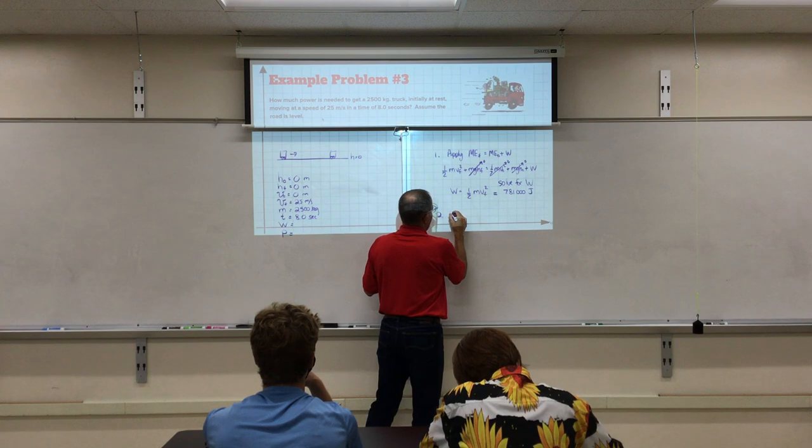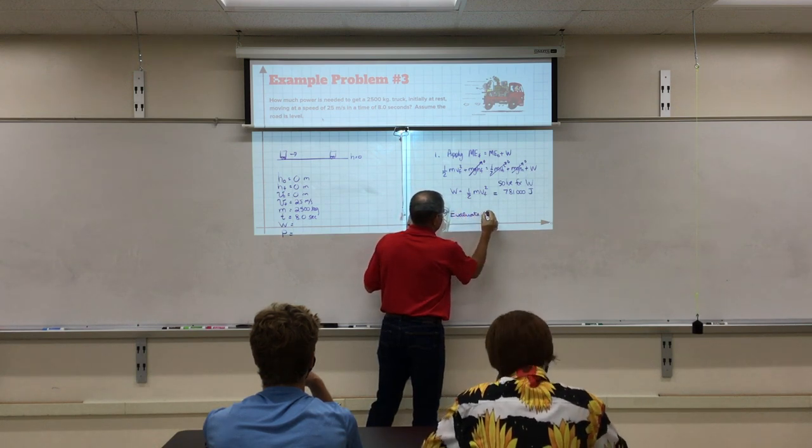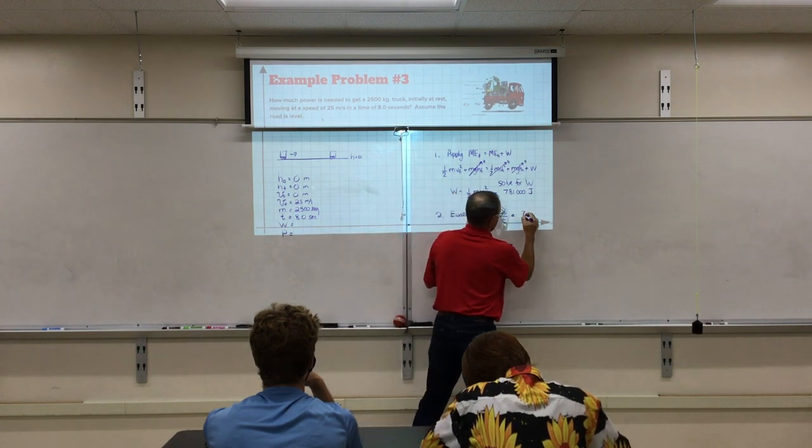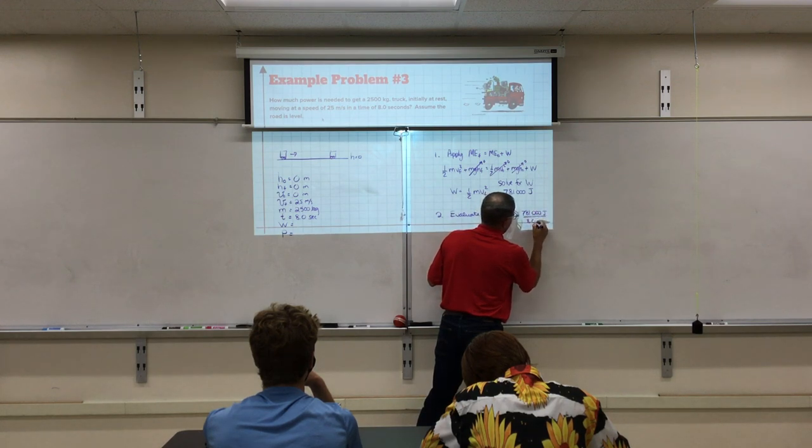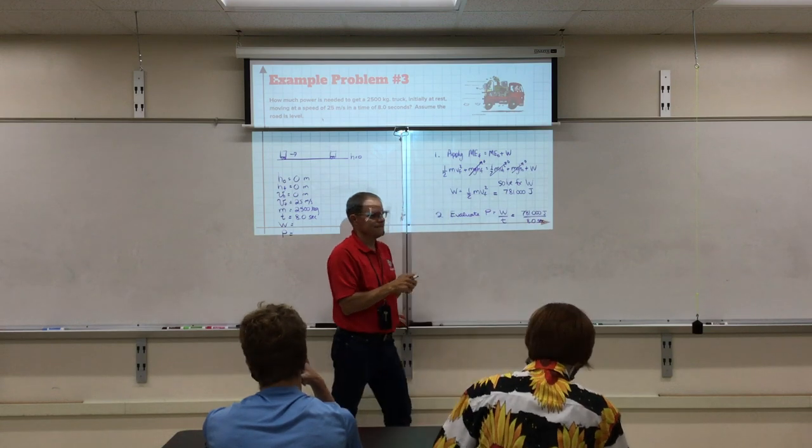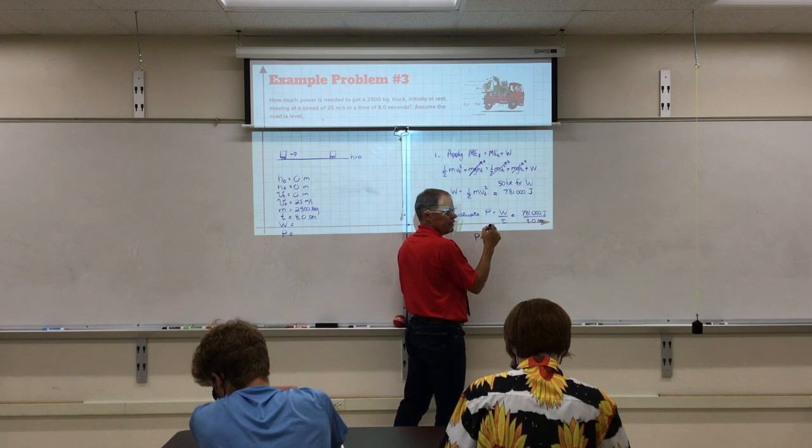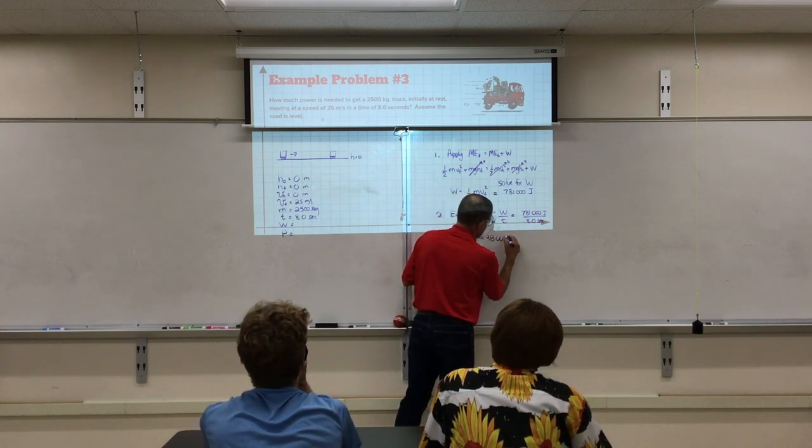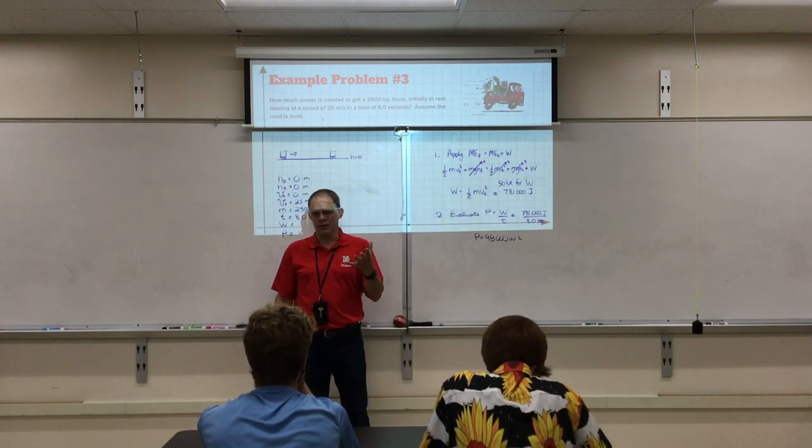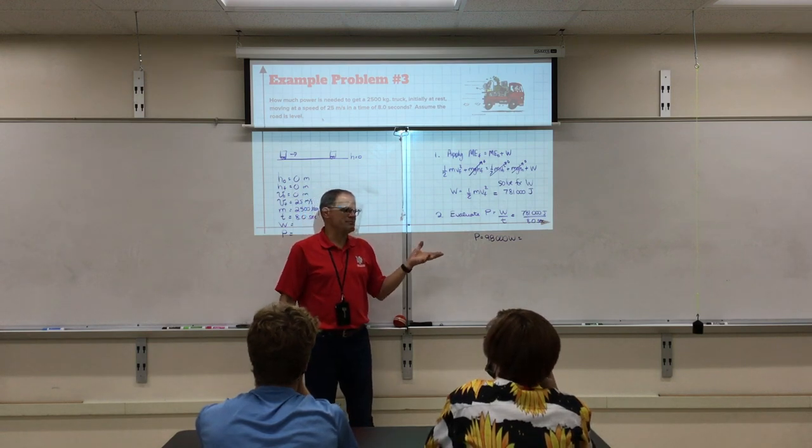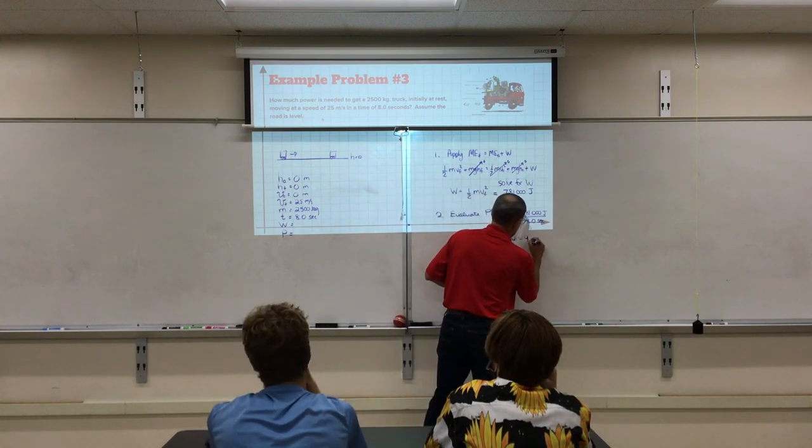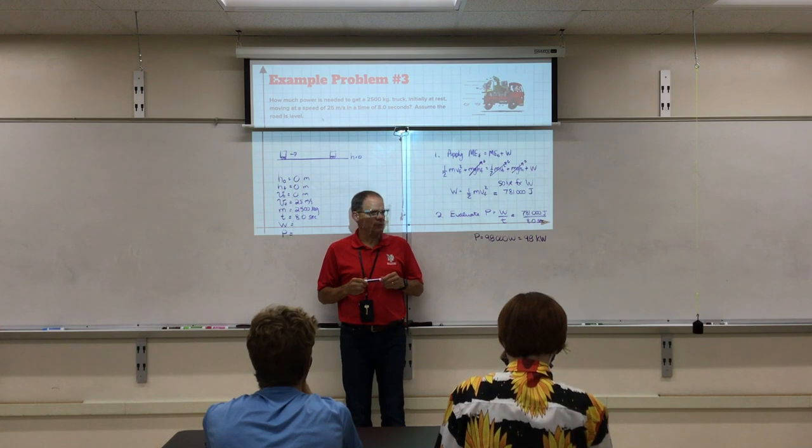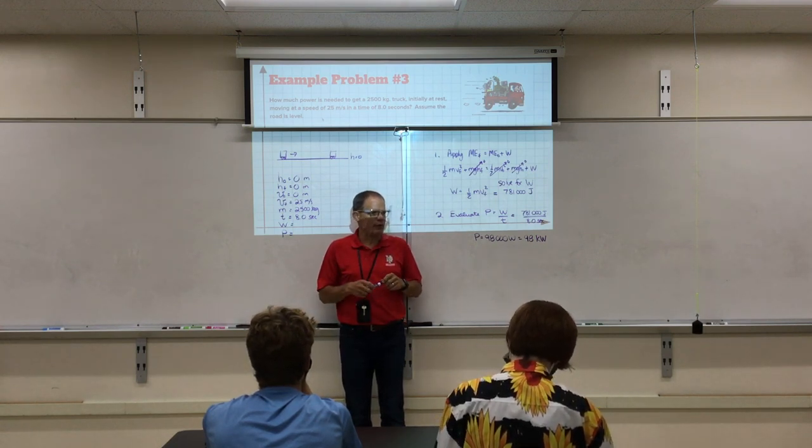Step two. Once we know the work, we can now evaluate power is the work divided by the time. That is 781,000 joules divided by 8.0 seconds. Which gives you a power of, Laura? 98,000. 98,000 watts. Or 98, I'll write it like this, watts. Or, a good engineer will never say a number that's not between 0 and 1,000. So that's why they use metric prefixes. It makes every number easier. So instead of saying 98,000, they would say 98 kilowatts. So there you go. That's the power you need for your fire truck if you want to get it going 25 meters per second in 8 seconds on the level ground.